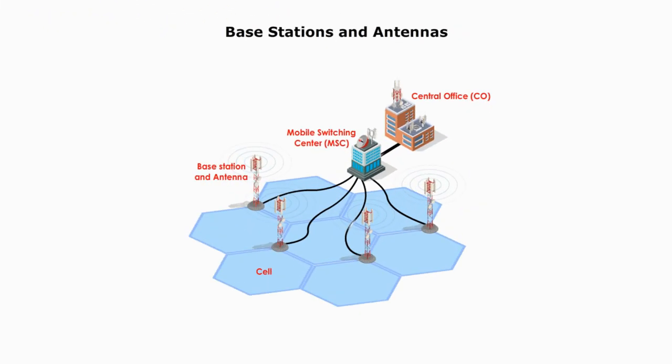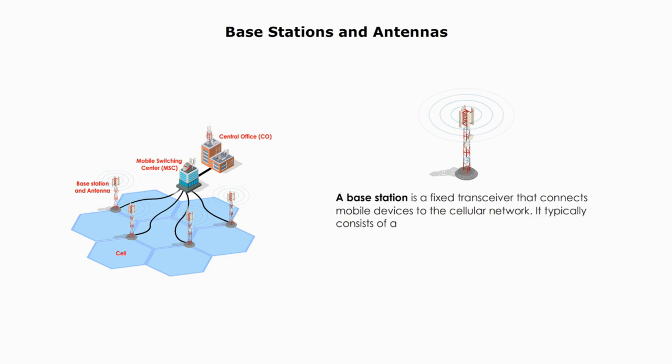Base station and antennas. A base station is a fixed transceiver that connects mobile devices to the cellular network. It typically consists of a transceiver, a power amplifier, and other electronic components.